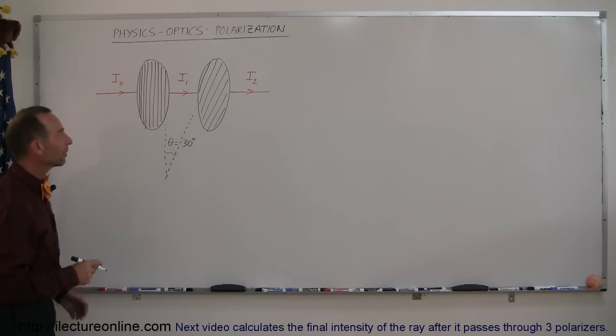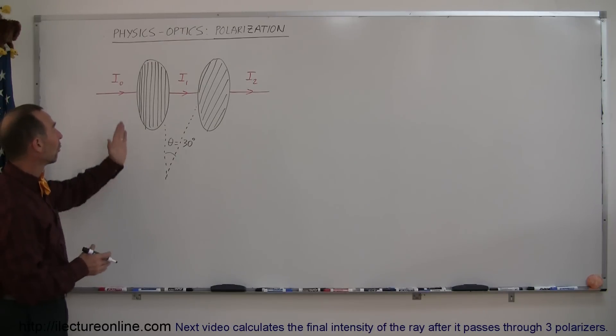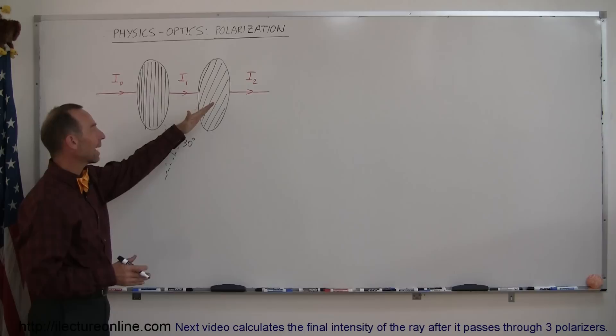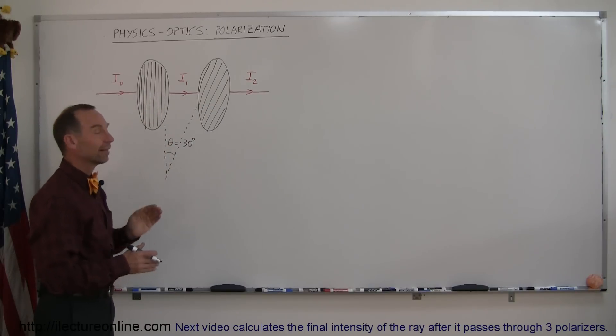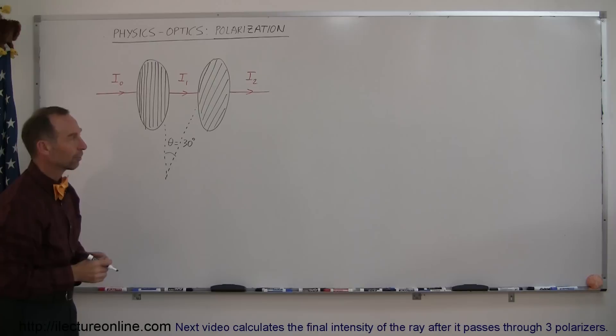Here's the next example of how to calculate the intensity of the light that passes through a set of polarizers. In this case, we have two polarizers, one that's directed vertically, up and down, and one that's directed at an angle relative to the first one. Let's say that the angle relative to the first one is 30 degrees. What will be the intensity of the light passing through the second polarizer?